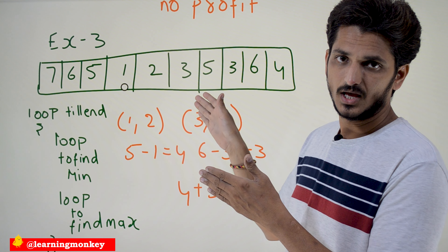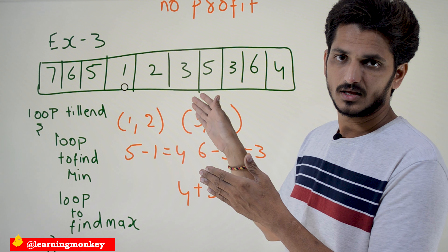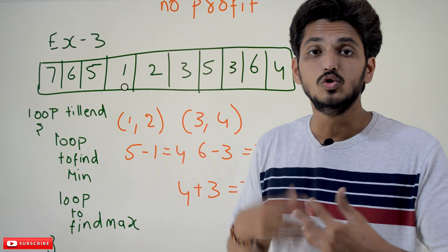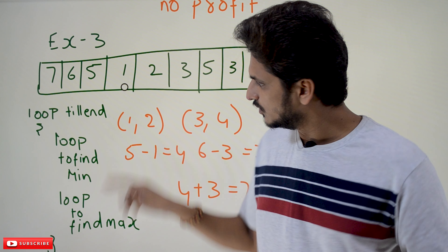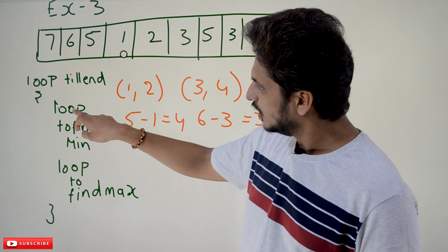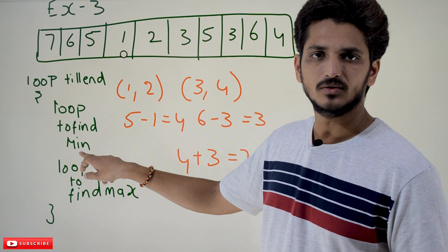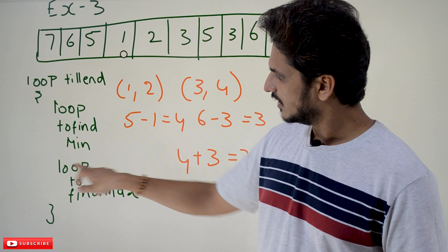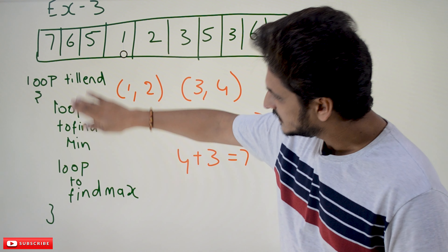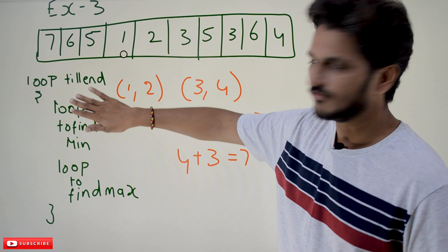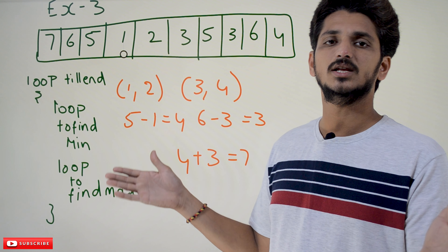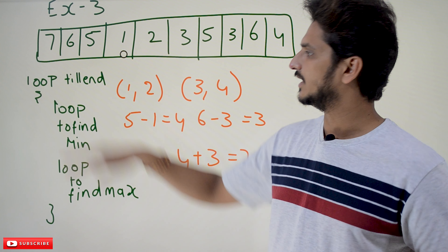Once you identify the minimum value and the next day is higher, now identify the maximum value. The next days go up, up, then down — so that's your maximum. Buy on the day with value 1 and sell on the day with value 5. The profit is 5 minus 1 equals 4. So: find the minimum value, then find the maximum value — those are the values we need.